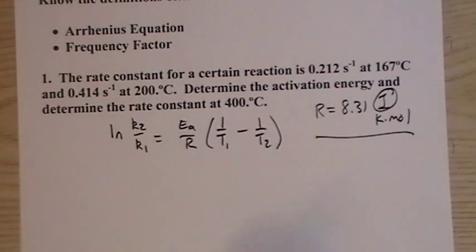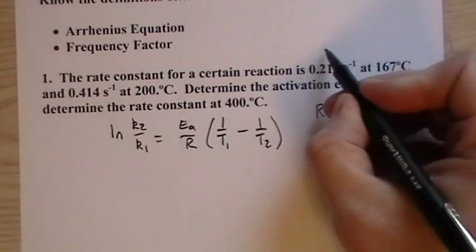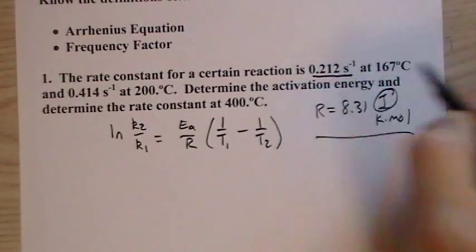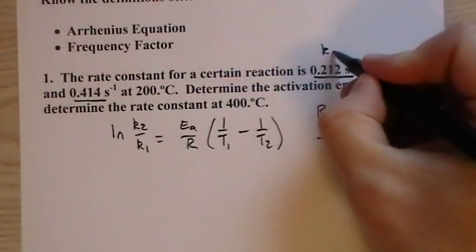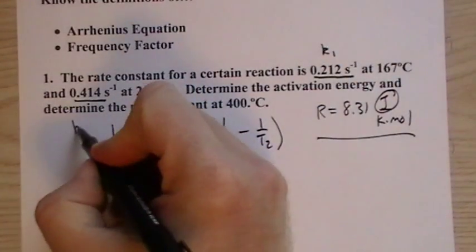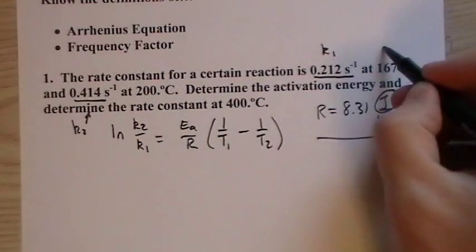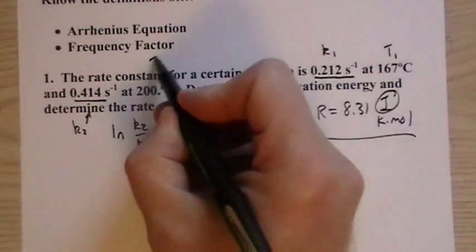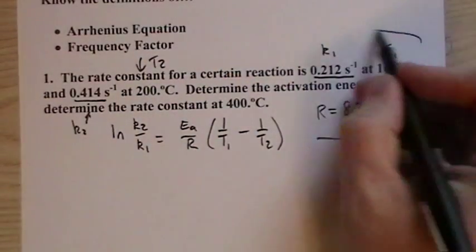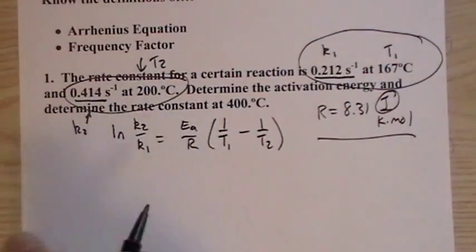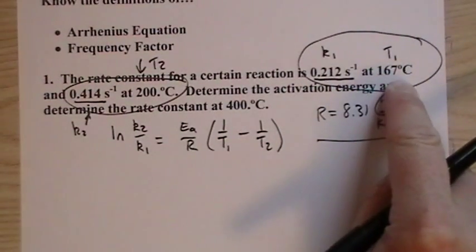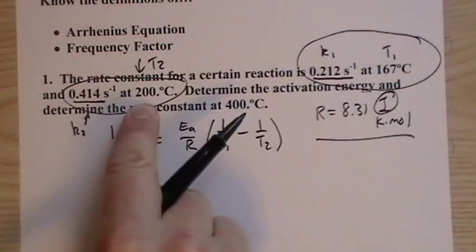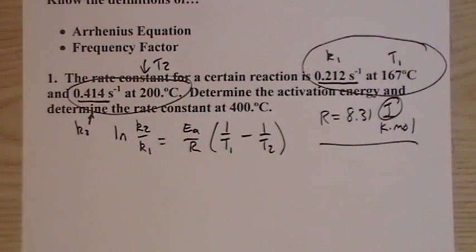So what we do first is we plug in our values. Now this value, that's a k, here's a k. Which one is k1 and which one is k2? Doesn't matter. We'll call this k1 and we'll call this k2. The only thing that matters is that this is T1 and this is T2. You have to group these together. If you mix and match them, you'll come up with the wrong answer.